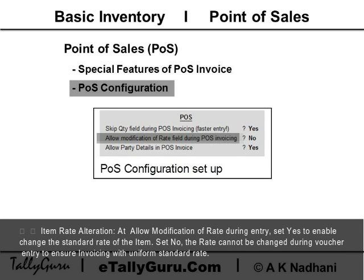Item Rate Alteration: At 'Allow Modification of Rate During Entry', set Yes to enable changing the standard rate of an item. Set No so the rate cannot be changed during voucher entry, to ensure a uniform standard rate in the invoice.